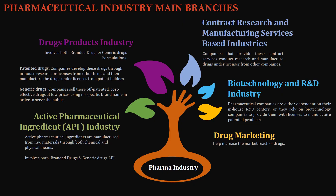The five main branches of the pharmaceutical industry are: the Active Pharmaceutical Ingredient (API) industry, the drug products industry, contract research and manufacturing services, biotechnology and R&D-based industries, and the drug marketing industry. In the drug products industry, it is important to understand the difference between patented drugs and generic drugs. Patented drug companies develop drugs through in-house research or licenses from patent holders, whereas generic drug companies sell off-patent, cost-effective drugs at low prices without a specific brand name, in order to serve the public.